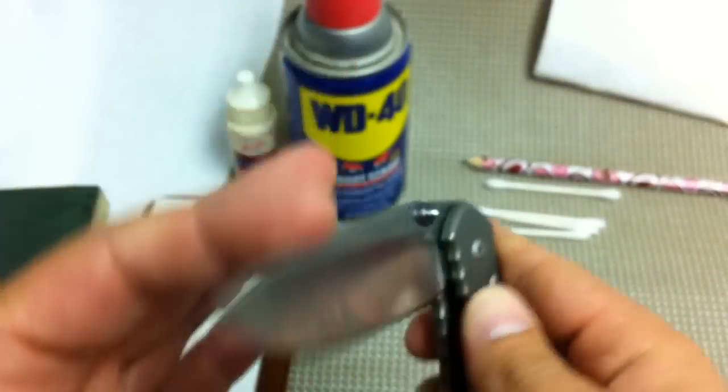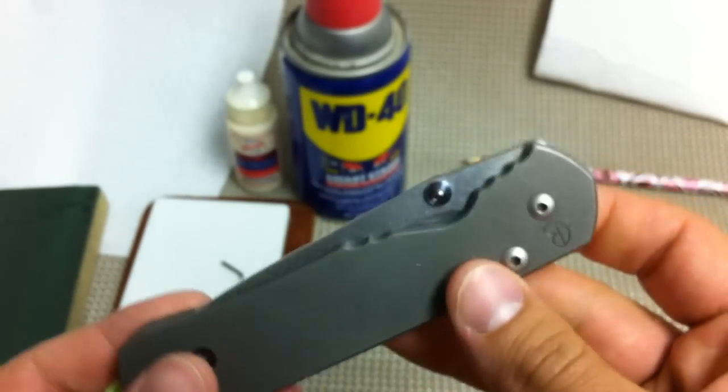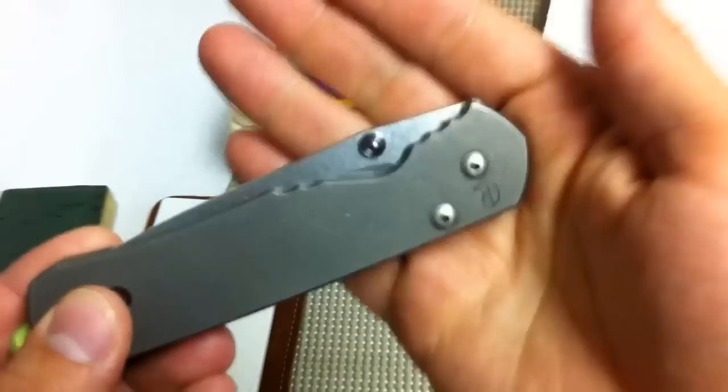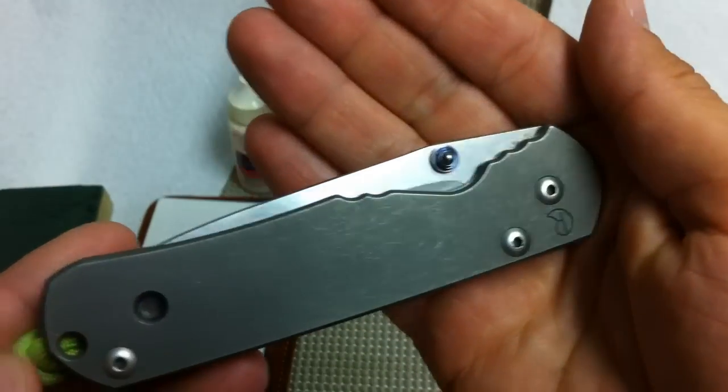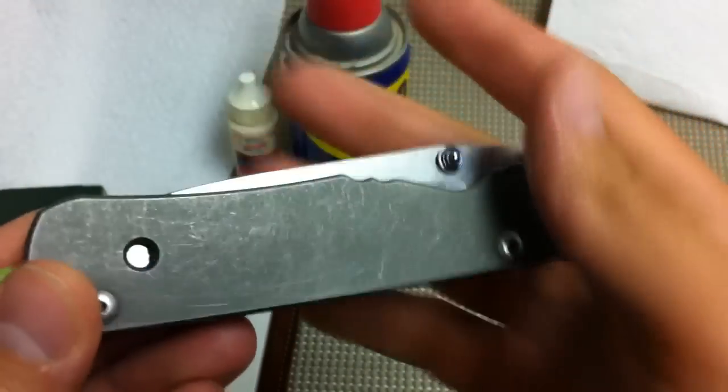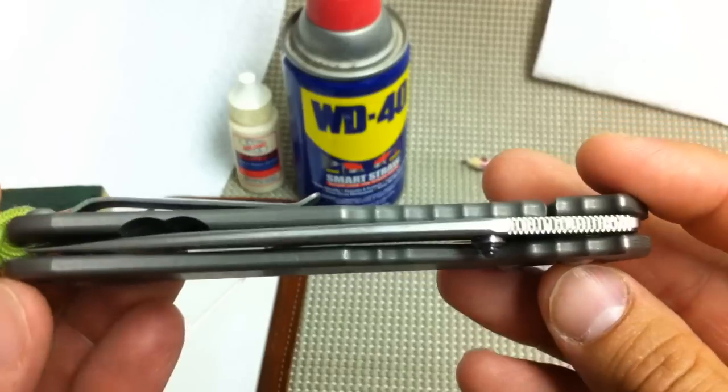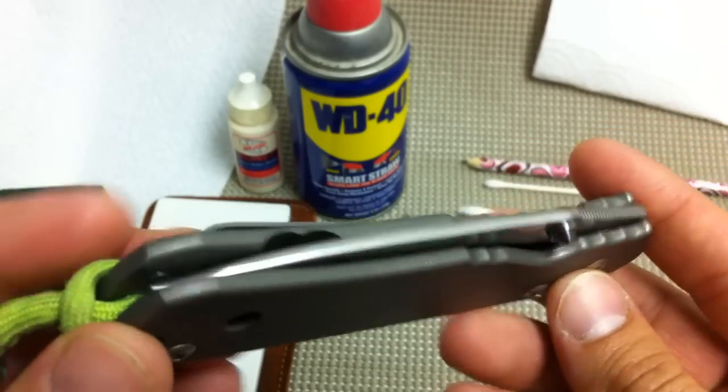So if you're not into Chris Reeve knives, basically the big complaint about Chris Reeve knives is that they run their S30V and S35VN steel just a little bit soft. And I would say that's true, but it does make sharpening easy.